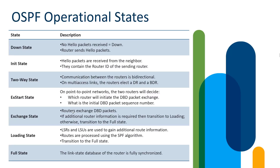We're here to discuss OSPF operational states, with the key focal point on the progression that OSPF takes from being activated on an interface to having multiple OSPF routers reaching convergence. To complete this convergence, we have seven states to go through: OSPF will transition from down to init, init to two-way, two-way to Xstart, Xstart to exchange, exchange to loading, and finally loading to full. Let's get started.